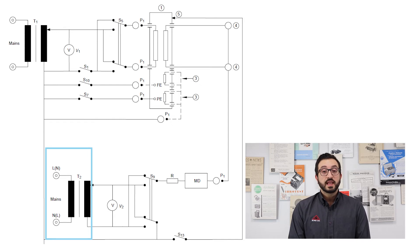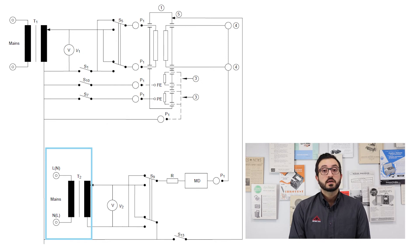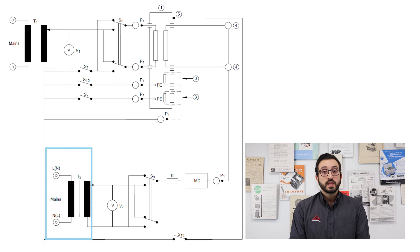The line is connected to the measuring device circuit via a current limiting resistor for safety. The neutral and ground of T2 are also tied together in order to complete the circuit.